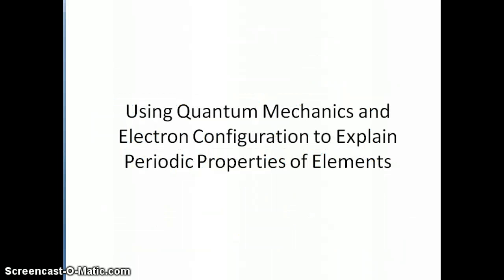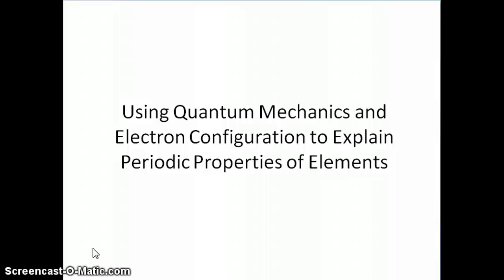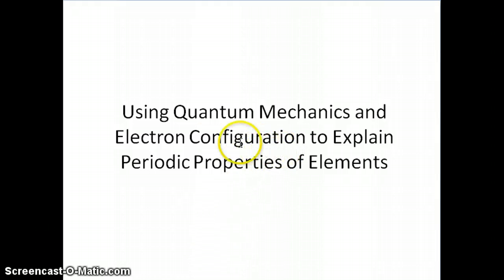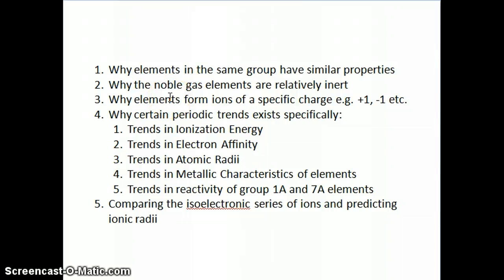Hi everyone. In this last part of quantum mechanics, what I want to do is use the rules of quantum mechanics that we learned — all the different things that we talked about, and primarily the energy function that we got from quantum mechanics of multi-electron systems — and use that to explain periodic properties of elements. In this discussion, we're going to cover all of these different subtopics, and they all relate to the properties of elements in the periodic table.